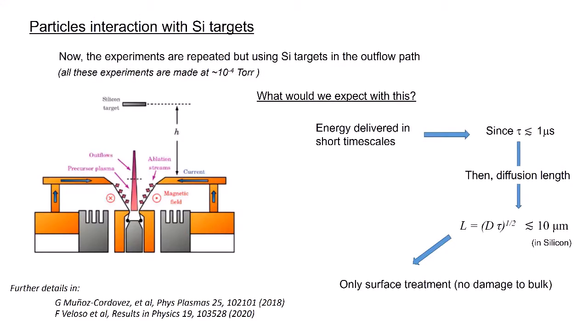What would we expect from this? Only by studying the thermal diffusion coefficient of silicon and the characteristic time of interaction of the outflows with the target, we can immediately realize that the outflows will only affect the first layers of the silicon with no interaction with its bulk.